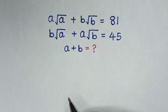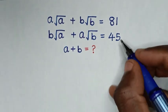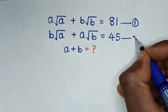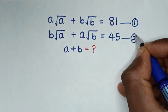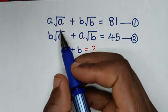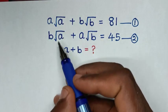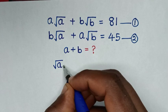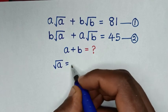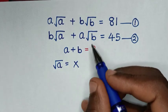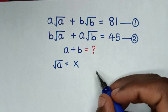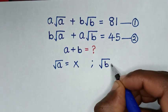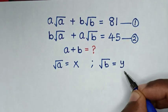First, we let this equation 1 and this equation 2. Then from here, we let square root of a equal to x, and we let square root of b equal to y.